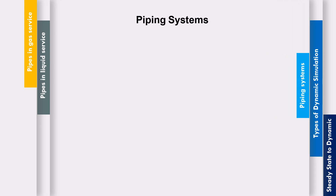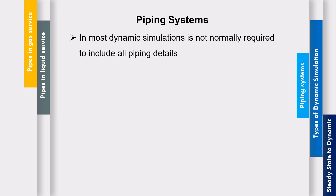Now, regarding piping systems: in most dynamic simulations, we do not include all the piping details because the liquid holdups or volume holdups in pipes are very small compared to other equipment. For example, the volume holdup in a distillation column is much higher than in the pipes, so we typically don't consider pipe details. However, if the pipe is extremely large, there is a significant holdup in it and the volume in the pipe is no longer negligible. In that case, we have to include the sizing and pipe details to calculate accurate results.